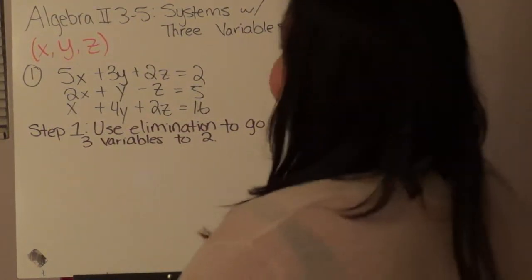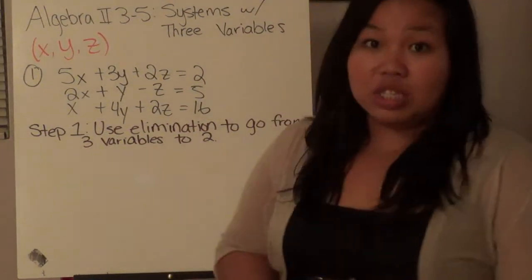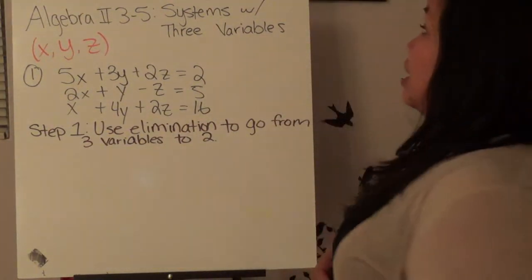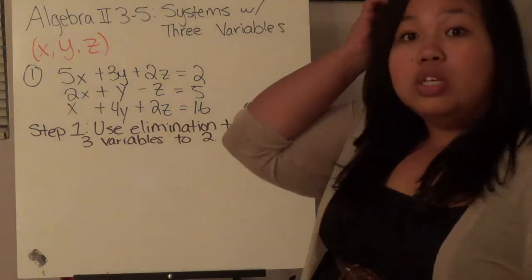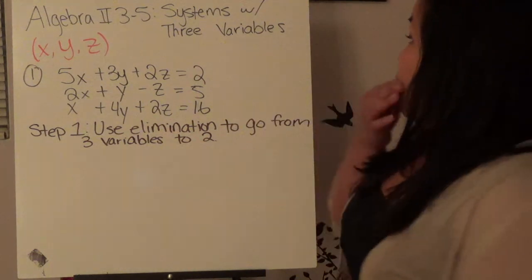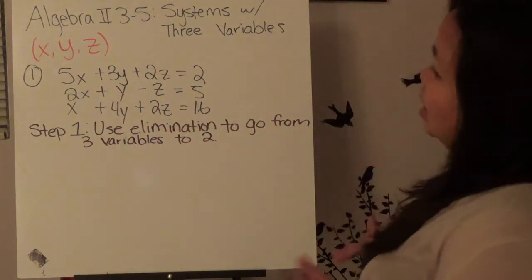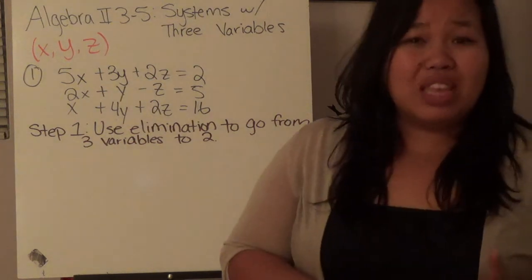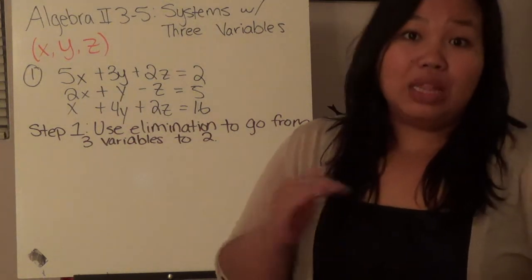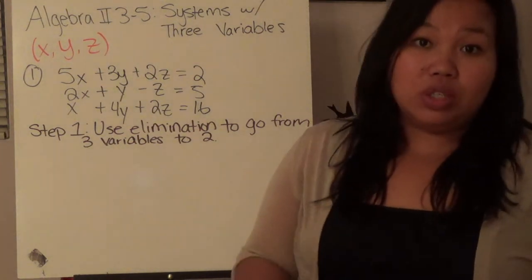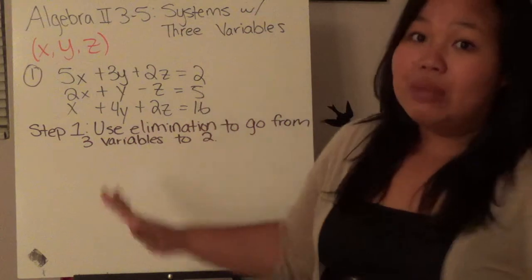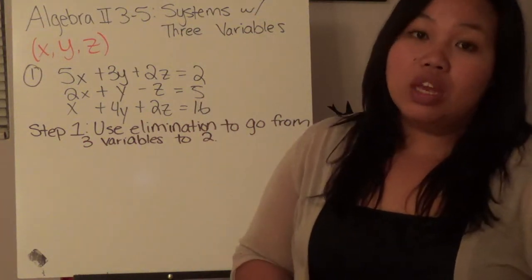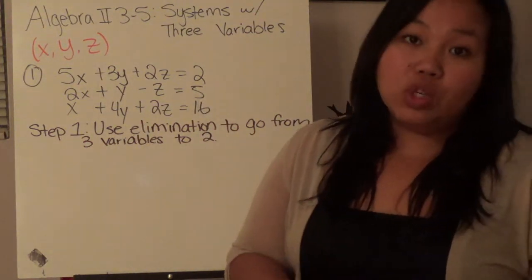Algebra 2, Section 3-5 is our last section before we take our test, and it's systems with three variables. We're going to be dealing with elimination and substitution — remember from Section 3-3 — except we're going to be dealing with it multiple times in one problem.